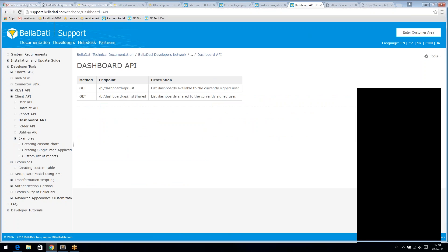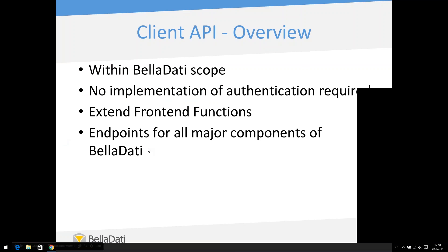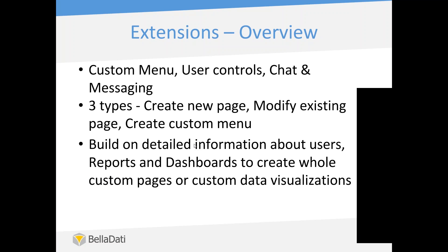You can also add or remove comments via the Report API, so you can implement a custom chat or comment feature. Then there is a Dashboard API which lets you list all dashboards and visualize them anywhere, and a Folder API for listing all folders. Now I will move to extensions, which are the main component of Belldata that uses the client API.